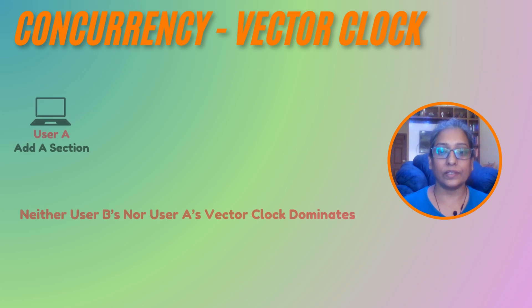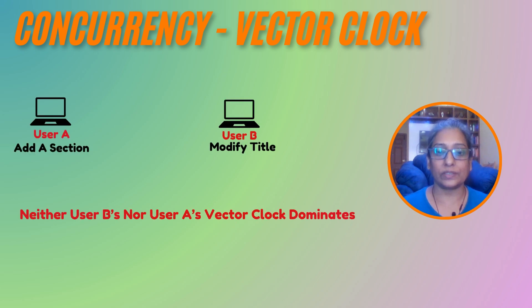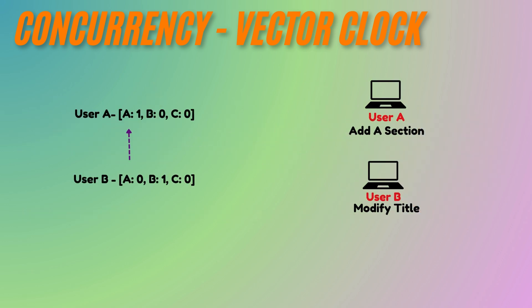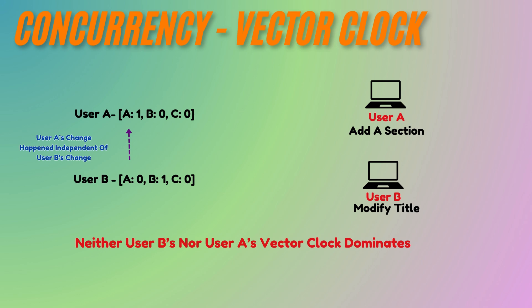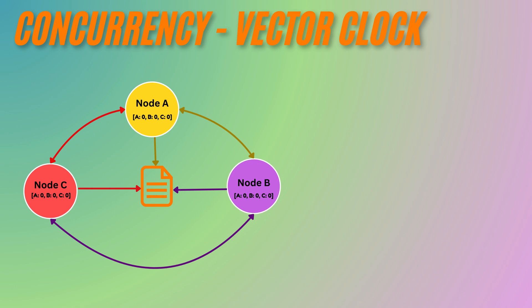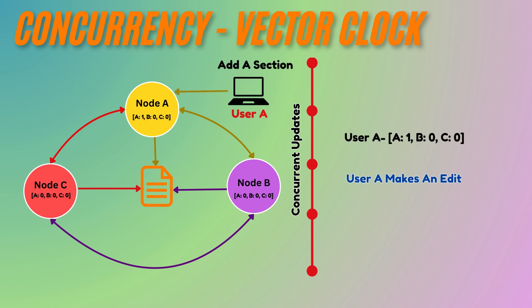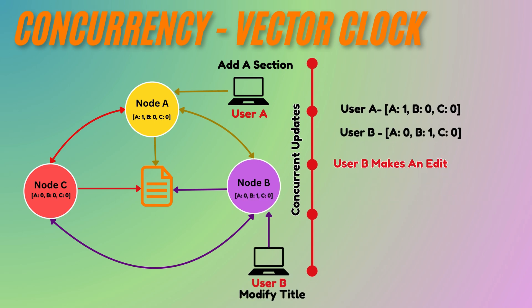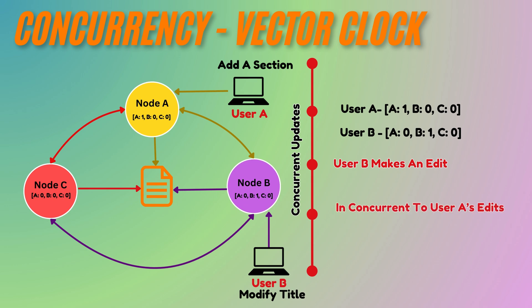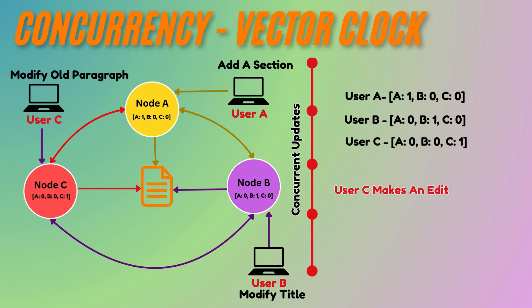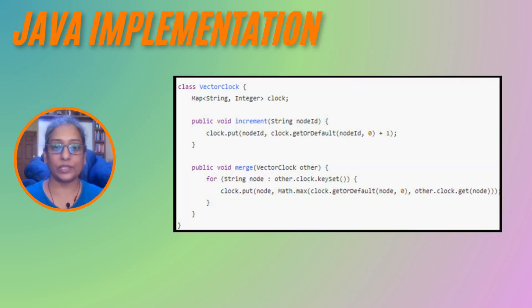In the case of concurrent updates, neither User A's vector clock nor User B's will dominate the other. This lack of dominance means neither clock can be said to have occurred before the other, indicating they are truly concurrent. Consider this example: all three users make edits without being aware of each other's changes, resulting in concurrent updates. User A makes an edit with no knowledge of B or C's edits; User B makes an independent edit concurrently with User A; User C also makes an independent edit concurrently with A and B.